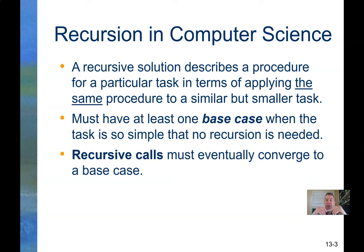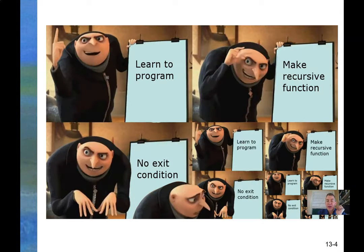A recursive solution says, take the task and make it smaller. You have to have at least one base case. You have to have a place where it stops. Otherwise, it goes on forever like that one previously. And since a computer is not infinite, it cannot go on forever. So recursive calls have to eventually converge to that base case. You have a base case, and you have to keep getting closer to it.